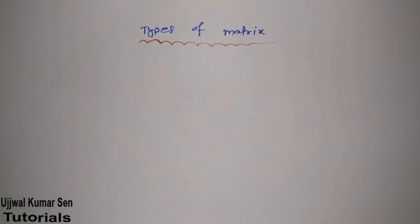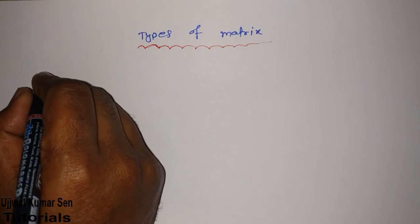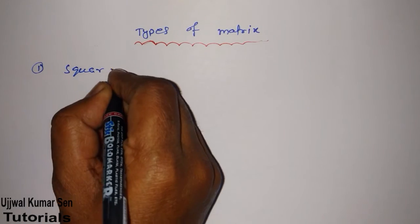Okay, so what is basically matrix? You know that it's a combination of rows and columns, right? So let's go for it. First of all, we'll start with a simple matrix that is known as square matrix.